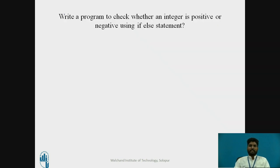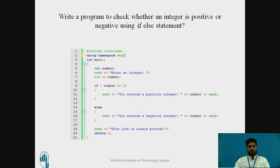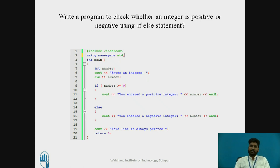We will write a program to check whether an integer is positive or negative using the if-else statement. The program is written in Code::Blocks with #include iostream, using namespace std, int main. I declared a variable number, used cout to prompt 'enter an integer', and stored it in number. The condition: if number is greater than or equal to zero, the output is 'you entered a positive number'; else, 'you entered a negative integer'. The last cout line is always printed whether the condition is true or false.